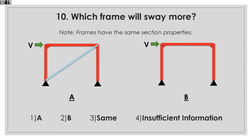Which frame will sway more? We have two frames — one with the brace and the other one without the brace. As you may have guessed, the one with the brace is stiffer laterally and will sway less.